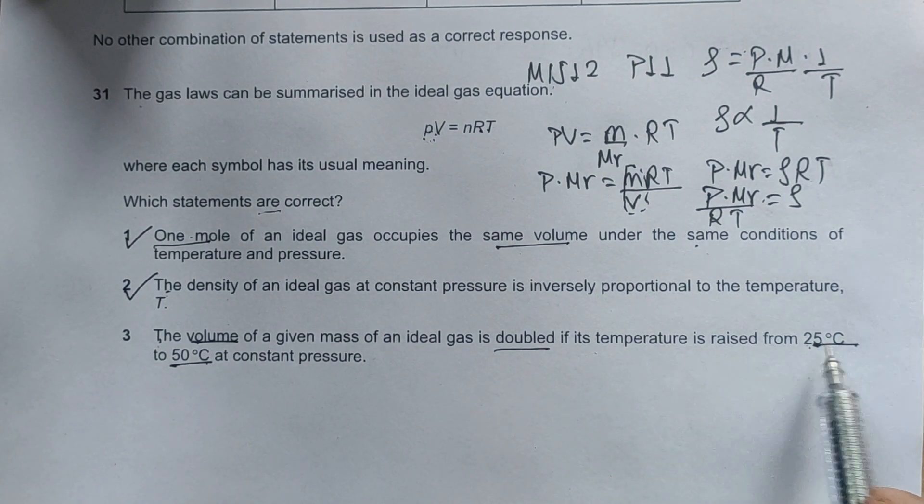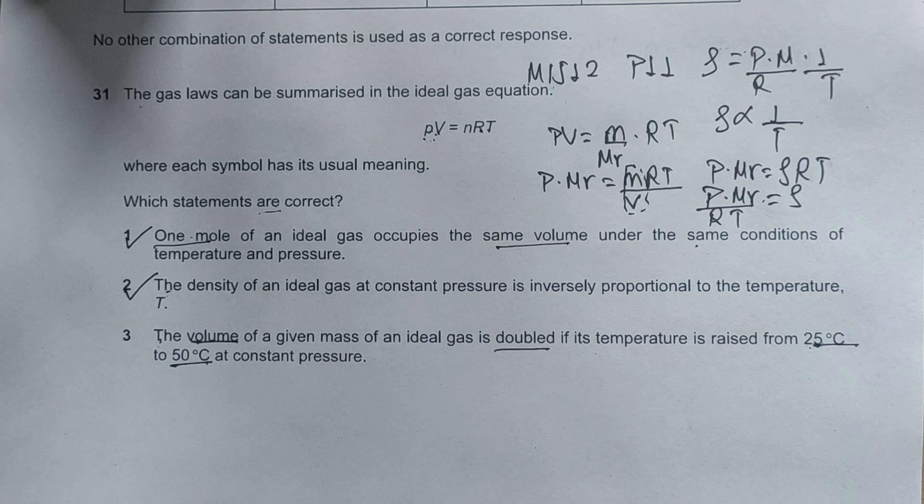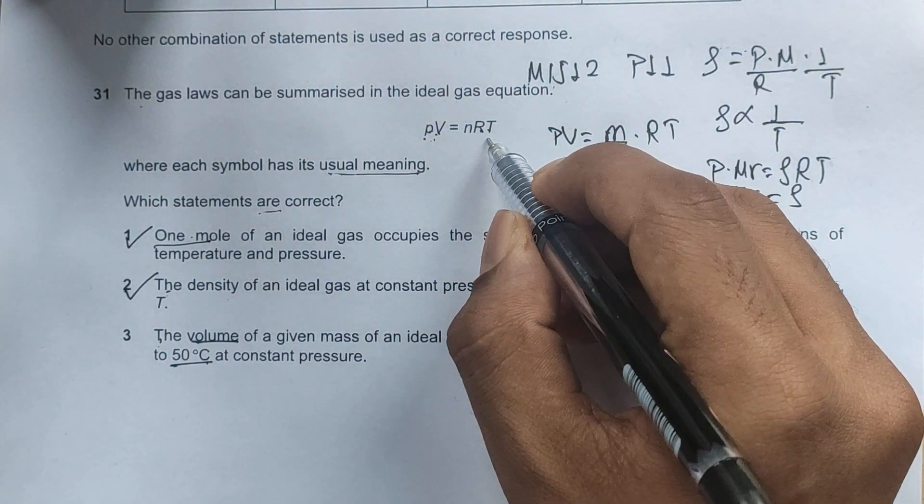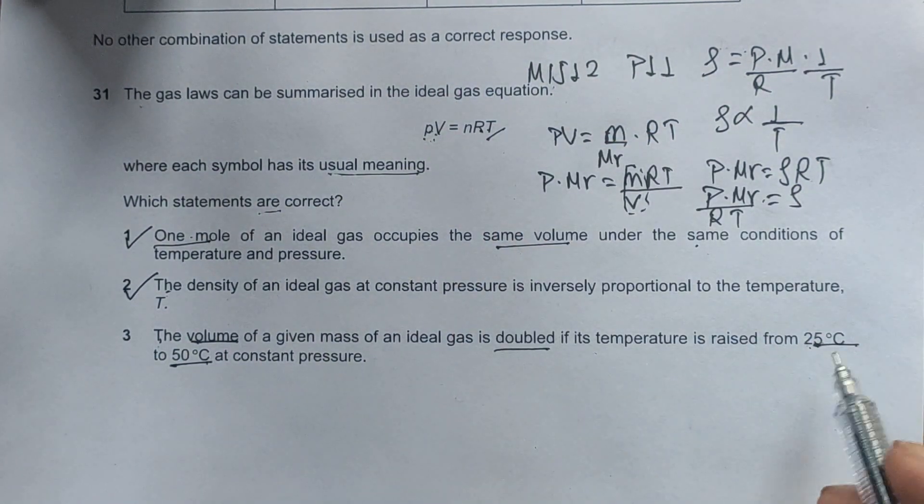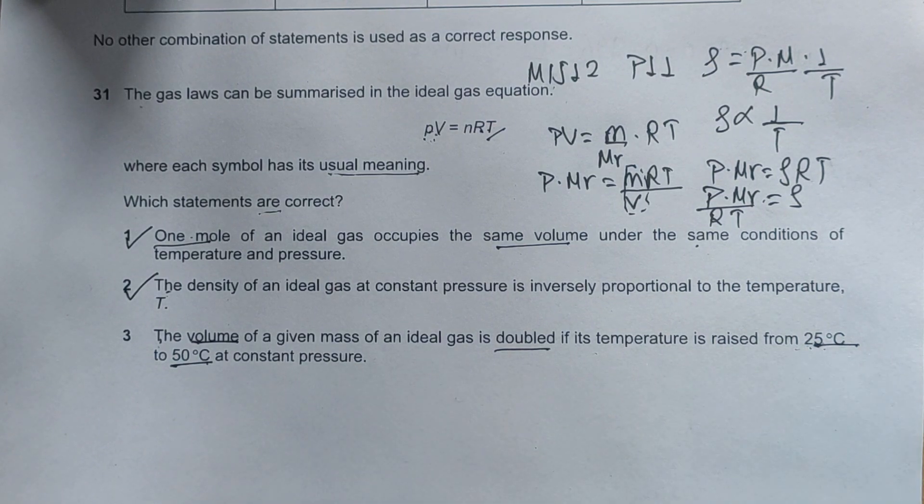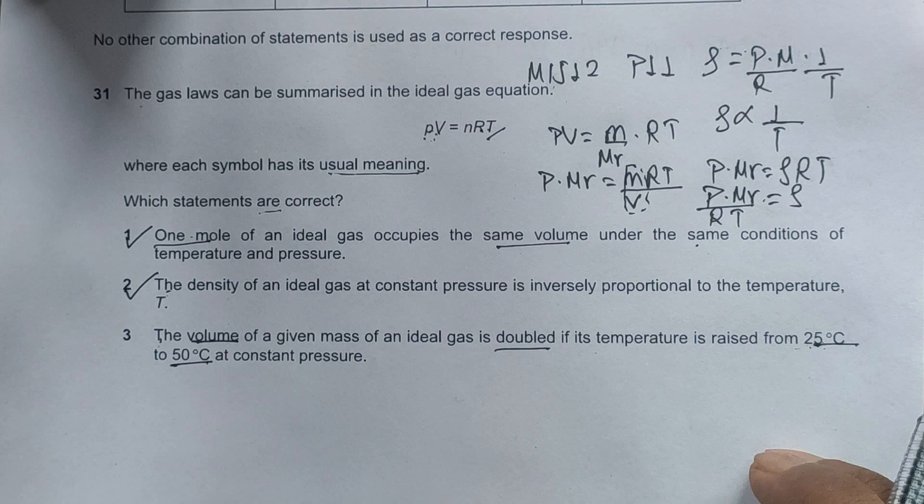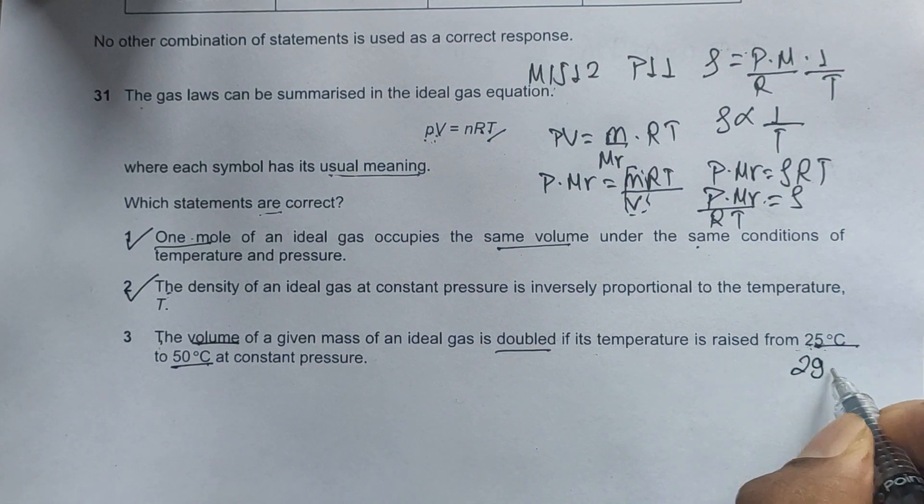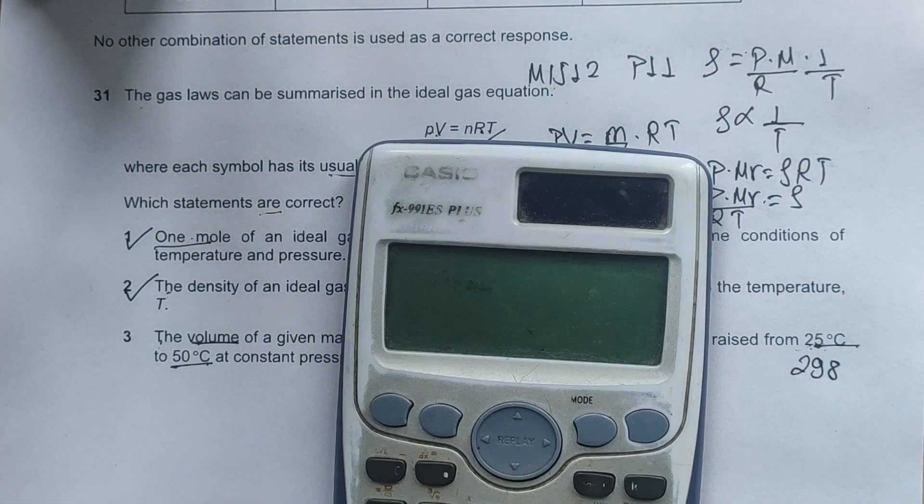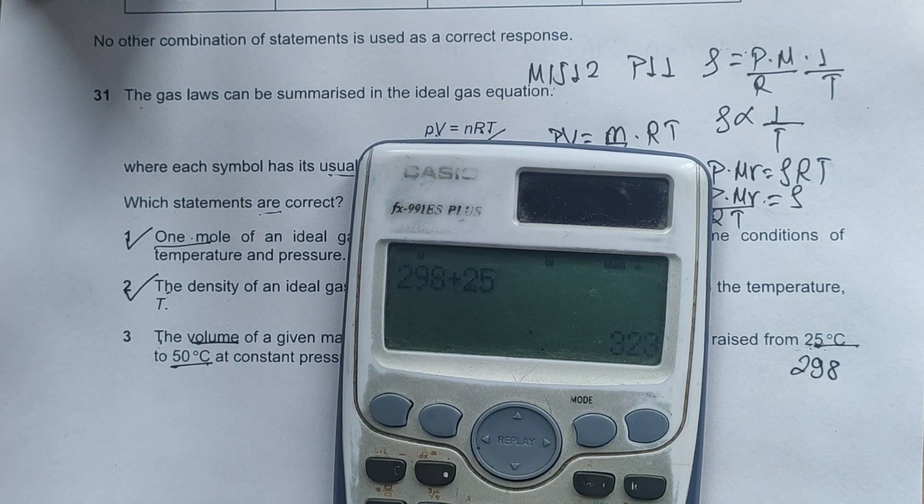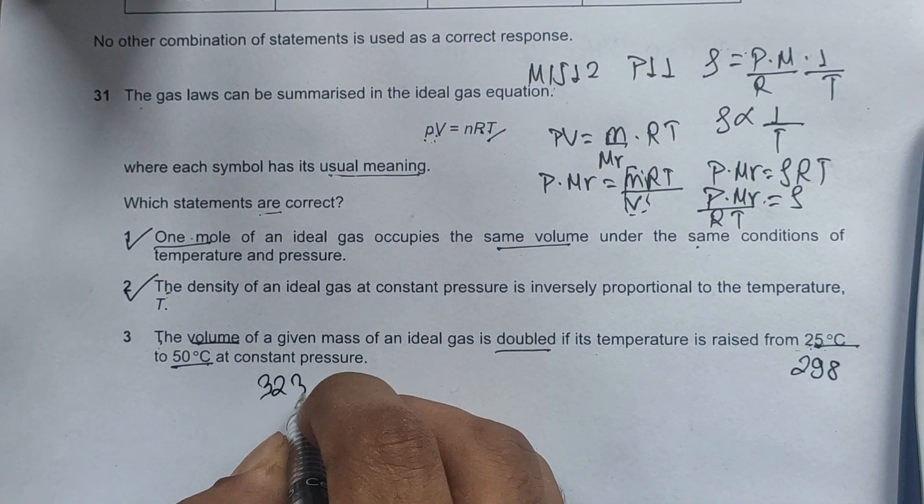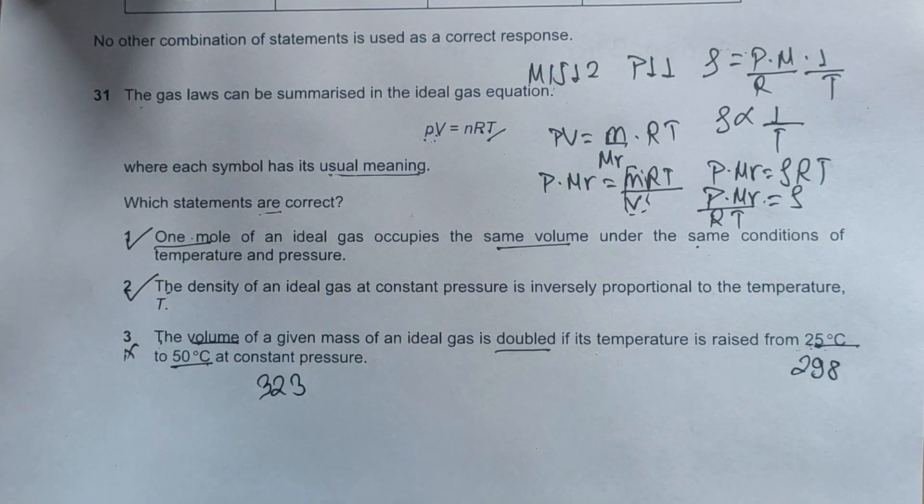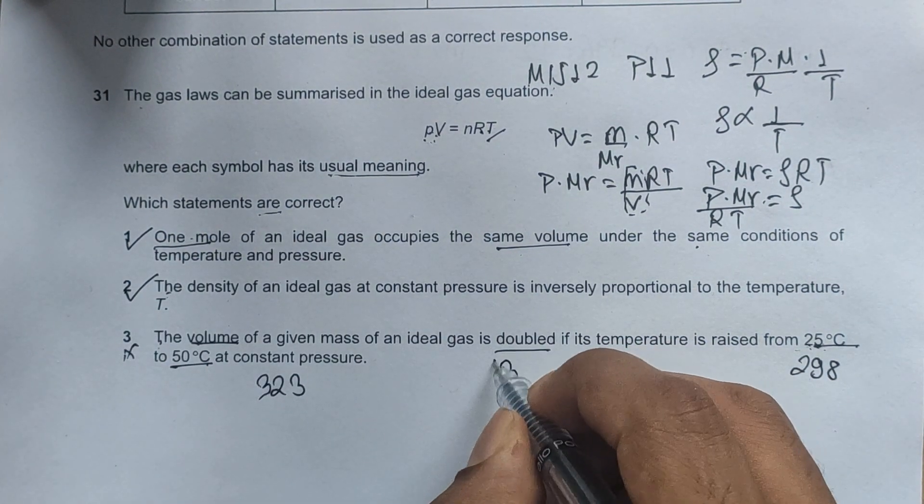A thing to note here is the question says where each symbol has its usual meaning, and in cases of usual meaning, we measure temperature in Kelvins, not in degree Celsius. So even though we raise the temperature double in degree Celsius, it won't double in case of Kelvin. Because 25 degrees Celsius in Kelvin is 298, and 50 degrees is 298 plus 25, which is 323. The temperature is obviously not doubled, it's not even increased by a factor of 1.5 times. So this makes option three incorrect, which means B is the final correct answer.